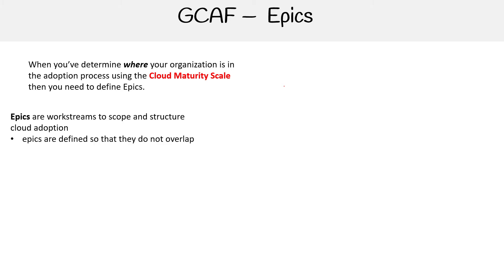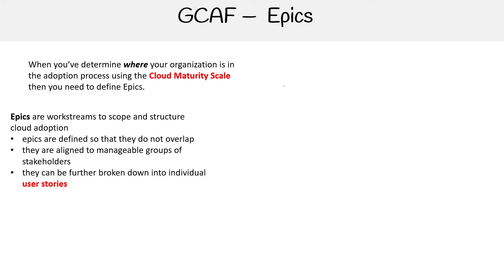Epics are defined so they do not overlap. They are aligned to manageable groups of stakeholders and can be further broken down into individual user stories. If you've ever done agile development, epics and user stories are pretty common, and you can definitely use them in JIRA.